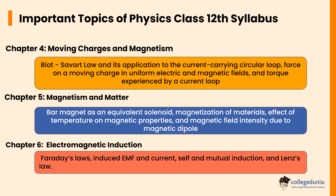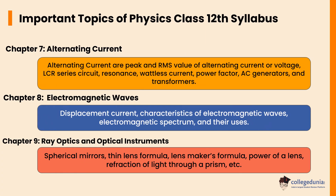In Chapter 7, Alternating Current, important topics are peak and RMS value of alternating current or voltage, LCR series circuit, resonance, wattless current, power factor, AC generators, and transformers.